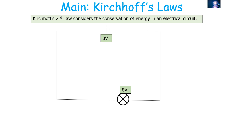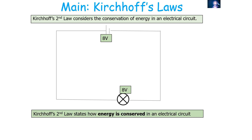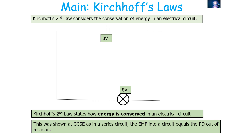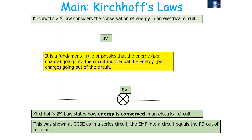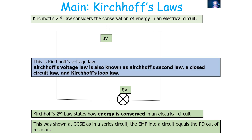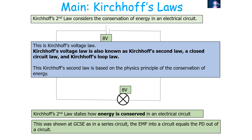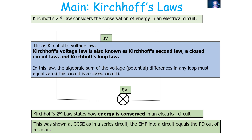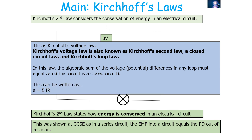Kirchhoff's second law considers the conservation of energy in an electrical circuit. It states how energy is conserved, which was shown at GCSE: in a series circuit the EMF into a circuit equals the PD out. It's a fundamental rule that energy per charge going into the circuit must equal the energy per charge going out. This second law is known as Kirchhoff's voltage law, the closed circuit law, or the loop law. The algebraic sum of the voltages in any closed loop must equal zero, written as: EMF = total I × R.